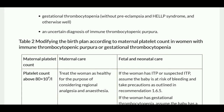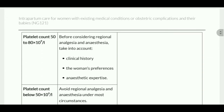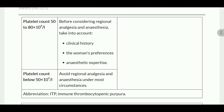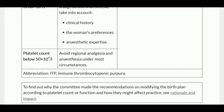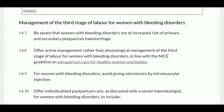For platelet count above 80, treat the woman as healthy for the purpose of considering regional analgesia. If the woman has ITP or suspected ITP, assume the baby is at risk of bleeding and take precautions. For platelet count between 50 and 80, take into account the clinical history, woman's preference, and anesthetic expertise before considering regional analgesia. For platelet count below 50, avoid regional analgesia under most circumstances.